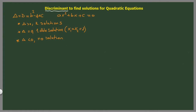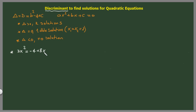So now we can start with this example: 3x² equals minus 4 plus 8x. As you can see, this equation is not in order — it's not rearranged into the standard form of a quadratic equation. So we need to rearrange it first, and then we can apply the discriminant on it.